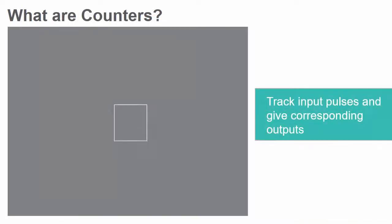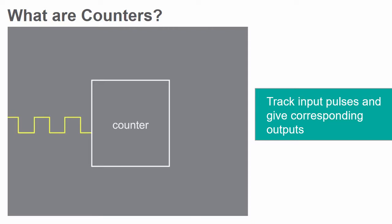Counters track the number of input pulses and give a corresponding output. For example, in a binary counter, the counter outputs a binary series of 1s and 0s, corresponding to the numbers of input pulses.